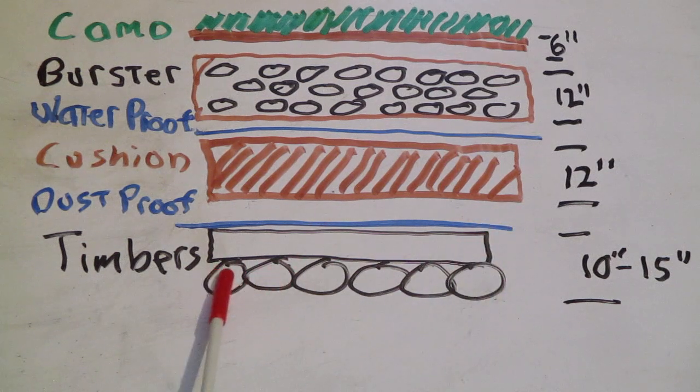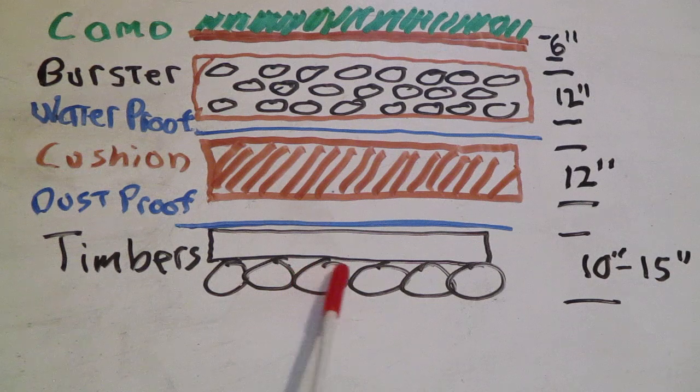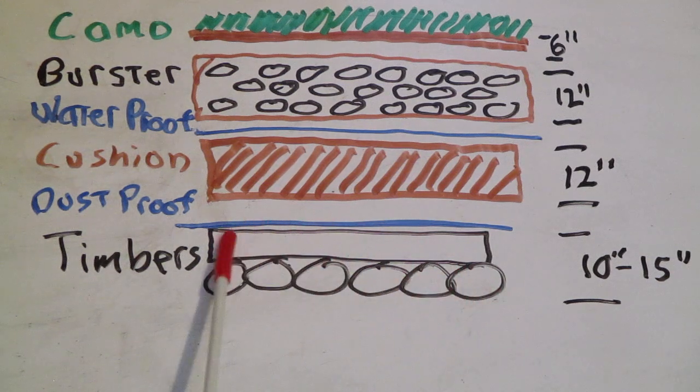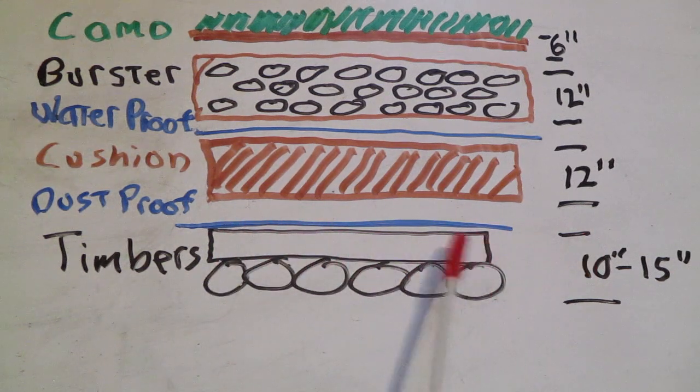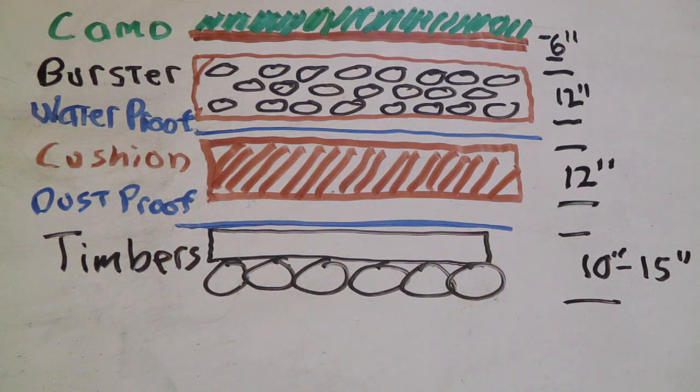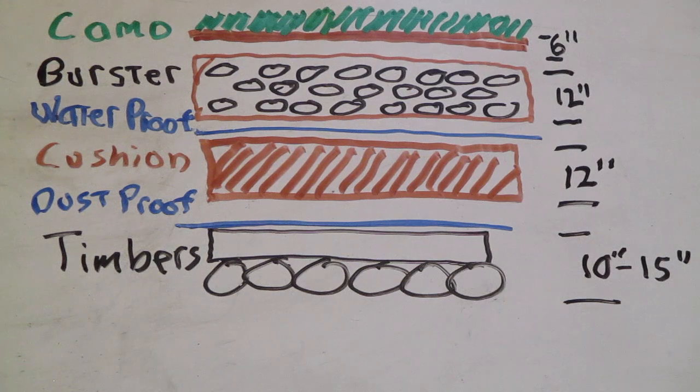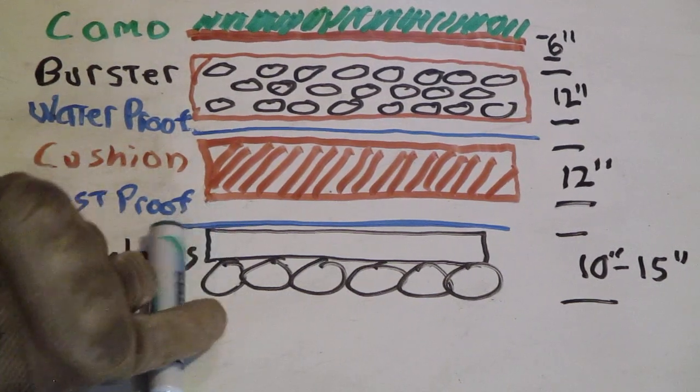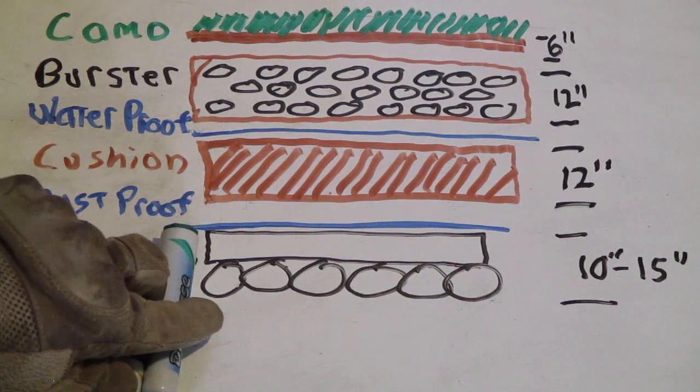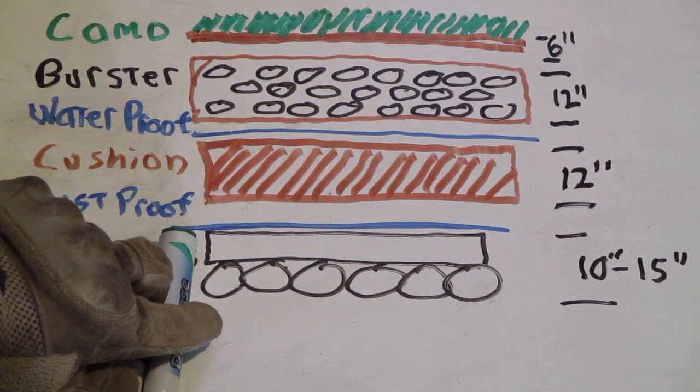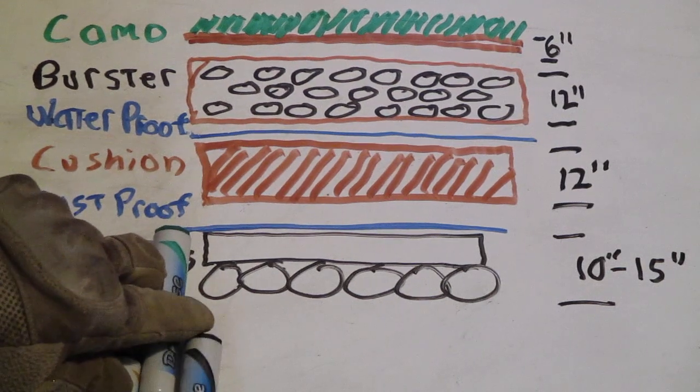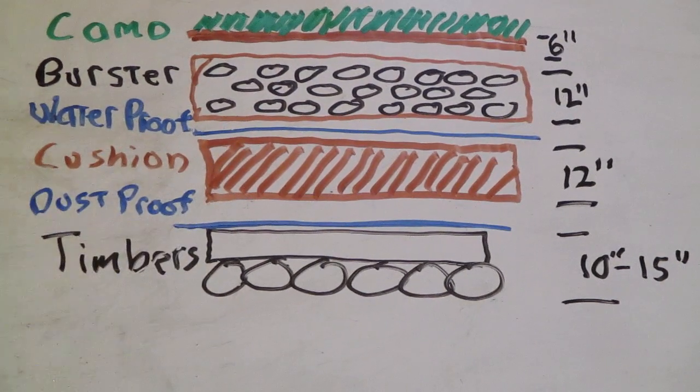You're going to have a line of logs, one right next to each other going this way, and then you'll have a line going the long way across the top. You are going to want to offset the joints, especially on this layer, so let's say you have a log this way - the one next to it's going to be this way, and the one in front of it's going to be this way. You're going to want to offset your joints to make them stronger.